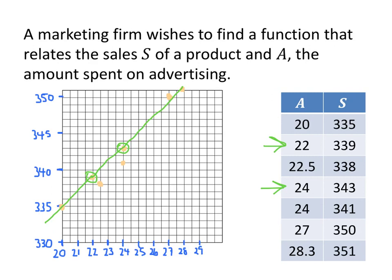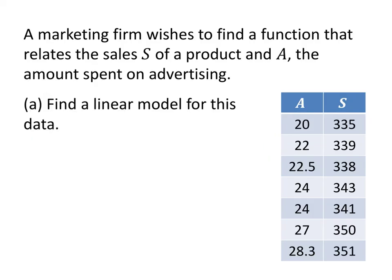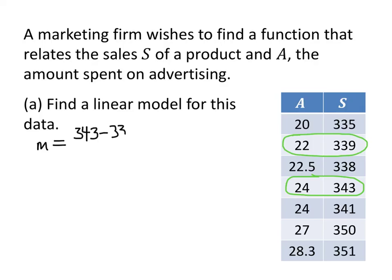The question asks us to find the linear model for this data. We're going to use the points (22, 339) and (24, 343). First, we find the slope: M equals the change in Y over the change in X, which is (343 − 339) divided by (24 − 22). The numerator is 4 and the denominator is 2, so our slope is 2.